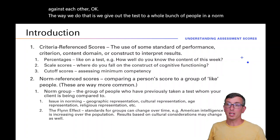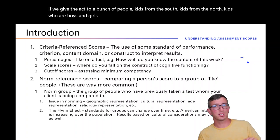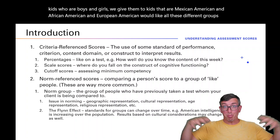The way we do that is we give the test to a whole bunch of people in a norm group — a representative sample. For example, if we give the ACT to kids from the South and the North, boys and girls, Mexican American, African American, European American — all these different groups — we have a representative sample. When I take the ACT, I can see how I scored compared to all those other people. That tells me something meaningful.